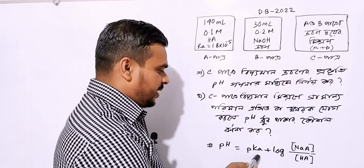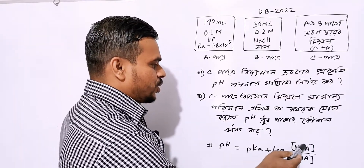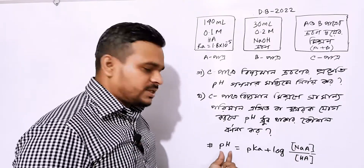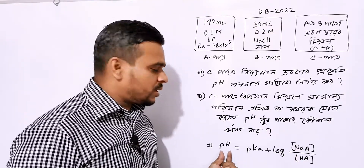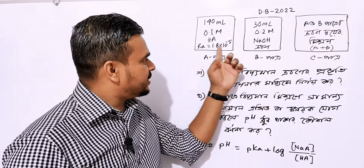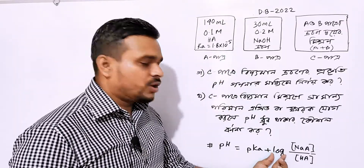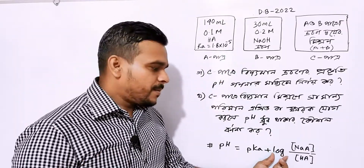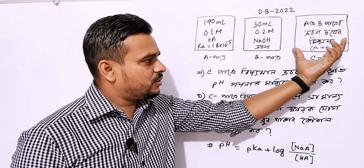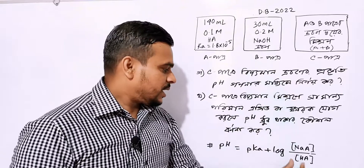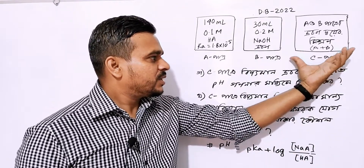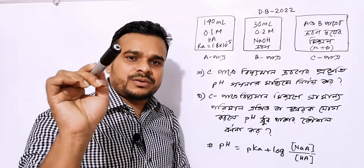pH equals pKa plus log of [base] over [acid]. So if you want to bear the pH, then you use pH equals pKa. Now look at the log — the number of moles of base, the number of moles of acid — the quantity of moles matters here.